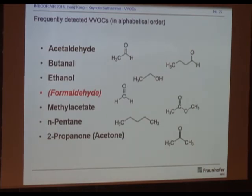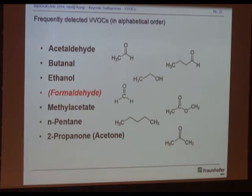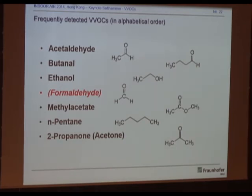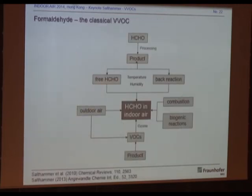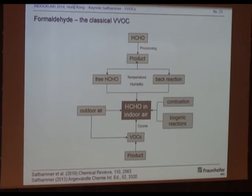We do a lot of building product testing at Fraunhofer WKI, and these are the VVOCs we frequently see — our list of top VVOCs: acetaldehyde, butanol, ethanol, formaldehyde, methyl acetate, pentane, and acetone. They are listed in alphabetical order, so you cannot derive a ranking from this. I will not discuss formaldehyde here — it is the classical VVOC and there are already many sources covering it. I will skip it.